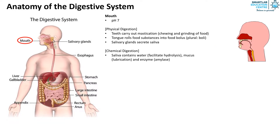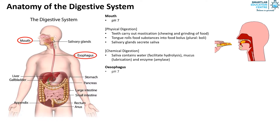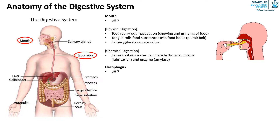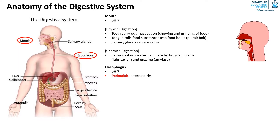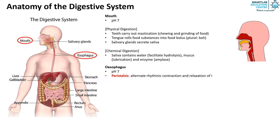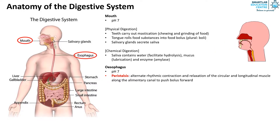Next we have the esophagus. It also has a pH of 7, and most importantly peristalsis is occurring here. Peristalsis is the alternate rhythmic contraction and relaxation of the circular and longitudinal muscle along the alimentary canal to push food bolus forward.